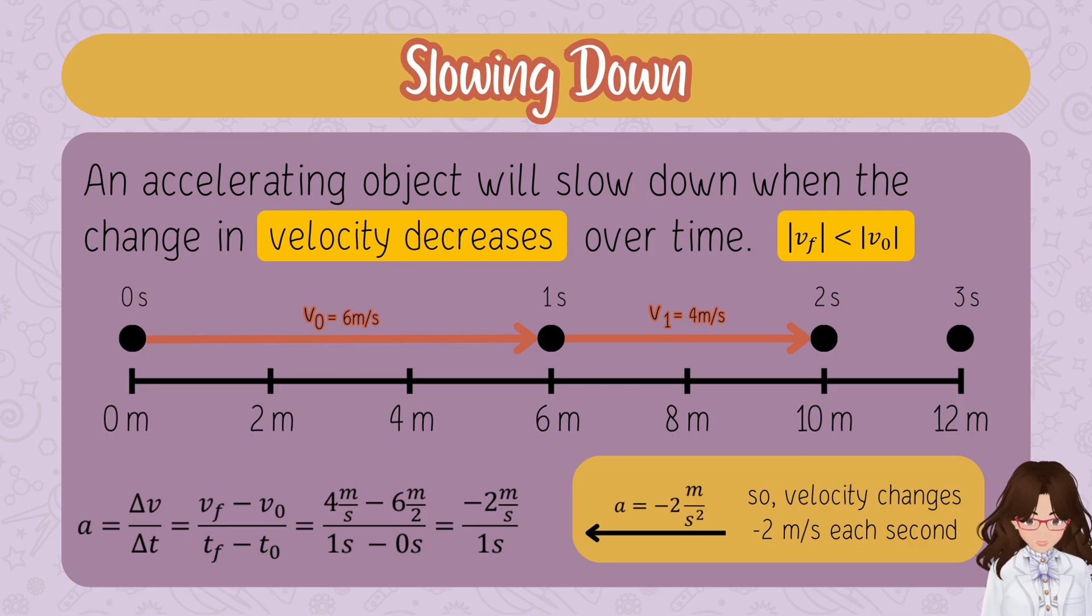What does this mean physically? It means the velocity is changing by negative two meters per second each second. Following this pattern, we have six, four, and four minus two. This should give us v₂ of two meters per second.